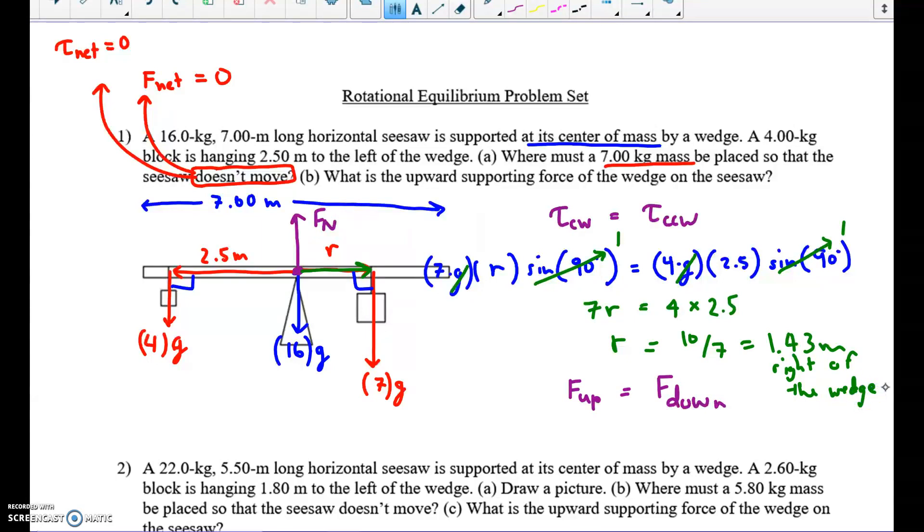Part B says, what is the upward supporting force on the seesaw? From the wedge on the seesaw. Find Fn. Well, we can balance up and down like I started to do before. The up force, there's only one. I should probably put, we're summing up the forces pointing upward. We're summing the forces that point downward. The only force pointing up is Fn. And look, I'm not considering clockwise or counterclockwise. That's what we do for torque. When we're adding forces, we don't care about the torque. We don't care about the rotation. So there's only one thing pointing up.